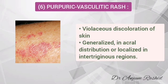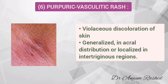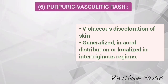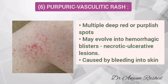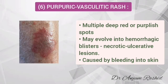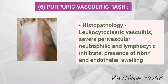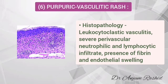Another rash reported in some COVID patients is purpuric vasculitic rash. Purpura is a violaceous discoloration of the skin caused by bleeding into it, and vasculitis is related to blood vessels. Purpuric lesions may be generalized, range in an acral distribution, or be localized in intertriginous regions. Purpuric elements may evolve into hemorrhagic blisters, possibly leading to necrotic ulcerative lesions. Histopathology shows leukocytoclastic vasculitis, severe perivascular neutrophilic and lymphocytic infiltrate, and presence of fibrin and endothelial swelling.